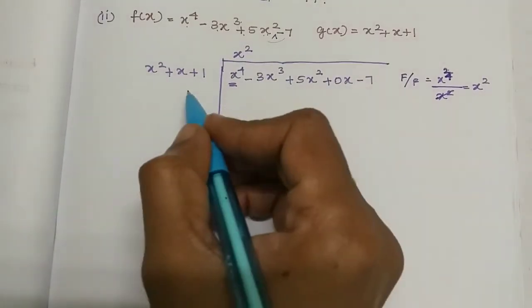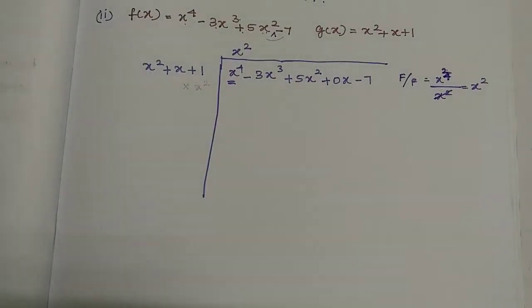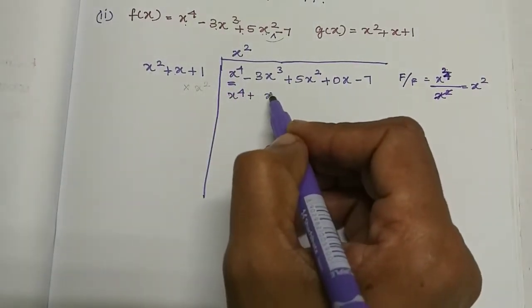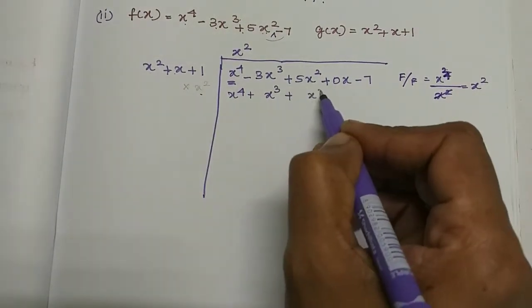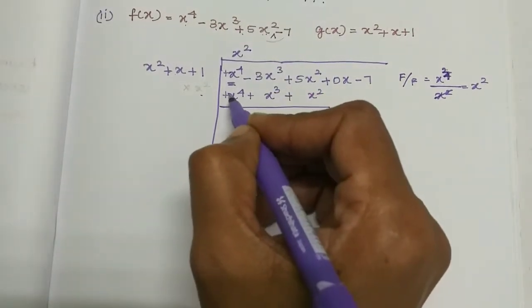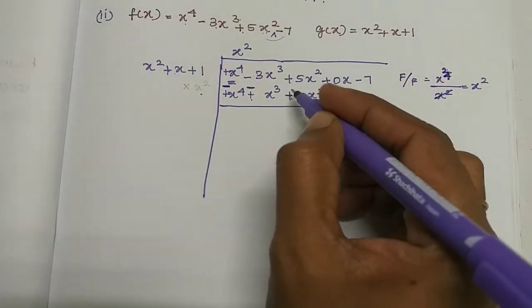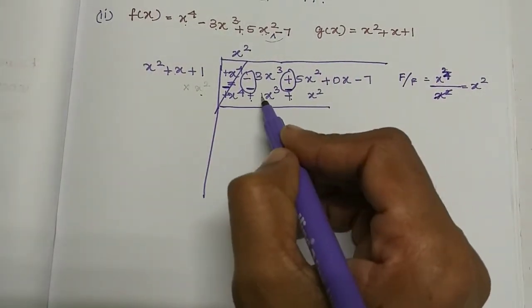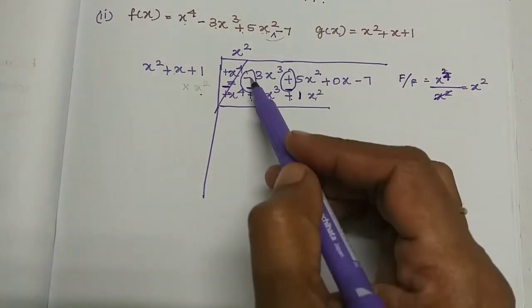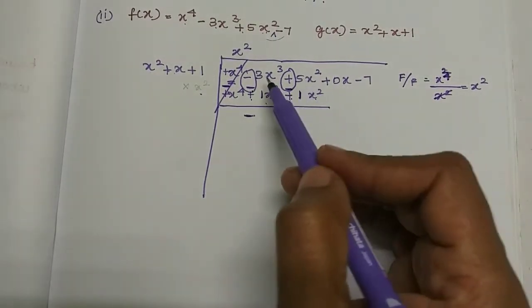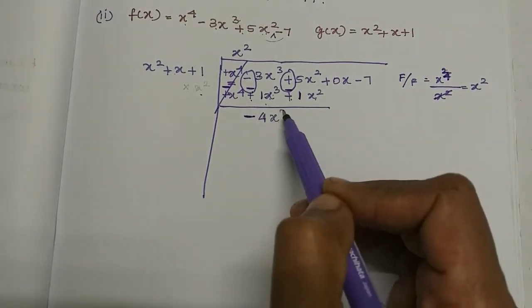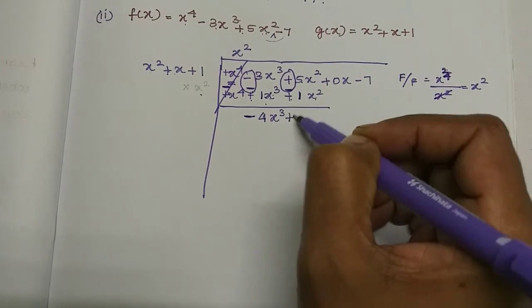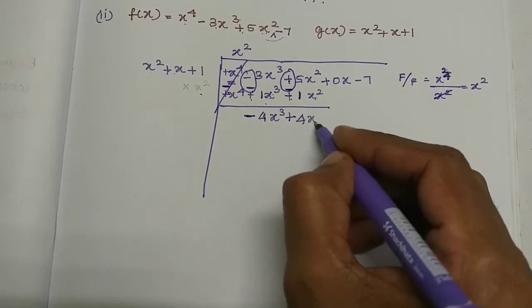Now multiply x squared by the divisor x squared plus x plus 1: x squared into x squared is x to the power 4; all terms are plus. Then we change signs to minus and group. The x to the power 4 terms cancel. Then 3 plus 1 is 4, so minus 4x cubed. Then 5 minus 1 is 4x squared. Bring down the next term 0x.